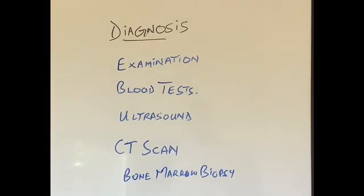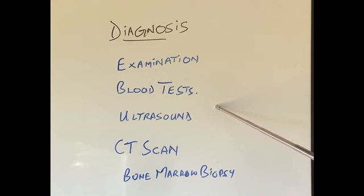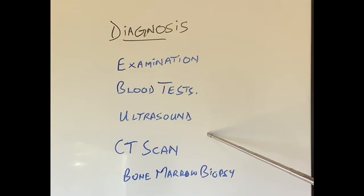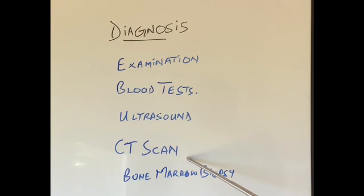So how do we diagnose hypersplenism? When the patient goes to the doctor, the doctor will examine the patient — and many of these patients will have a large spleen, will have splenomegaly. Blood tests will be done which will show that the red blood cell count is low (the patient is anemic), the white cell count is too low, and the platelet count is low as well. An ultrasound scan will show the spleen to be large, and in patients with portal hypertension the liver might be abnormal as well. A CT scan will also show a large spleen in many patients, or in some patients a normal size spleen, but can show other problems which might be causing the spleen to become hyperactive.